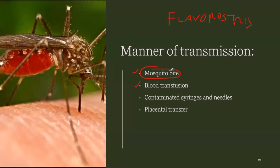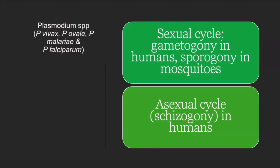There are two important cycles in the life cycle of malaria. The sexual cycle is known as gametogony in humans and sporogony in mosquitoes. The asexual cycle in humans is known as schizogony. This holds true for all major Plasmodium species.